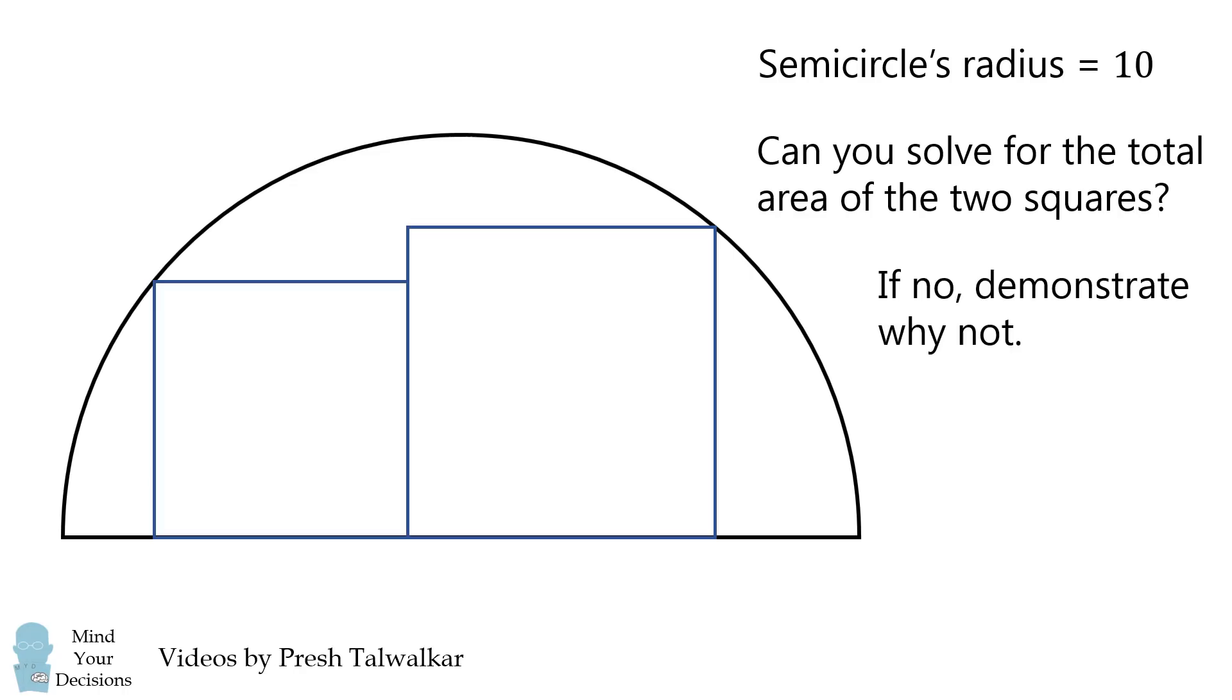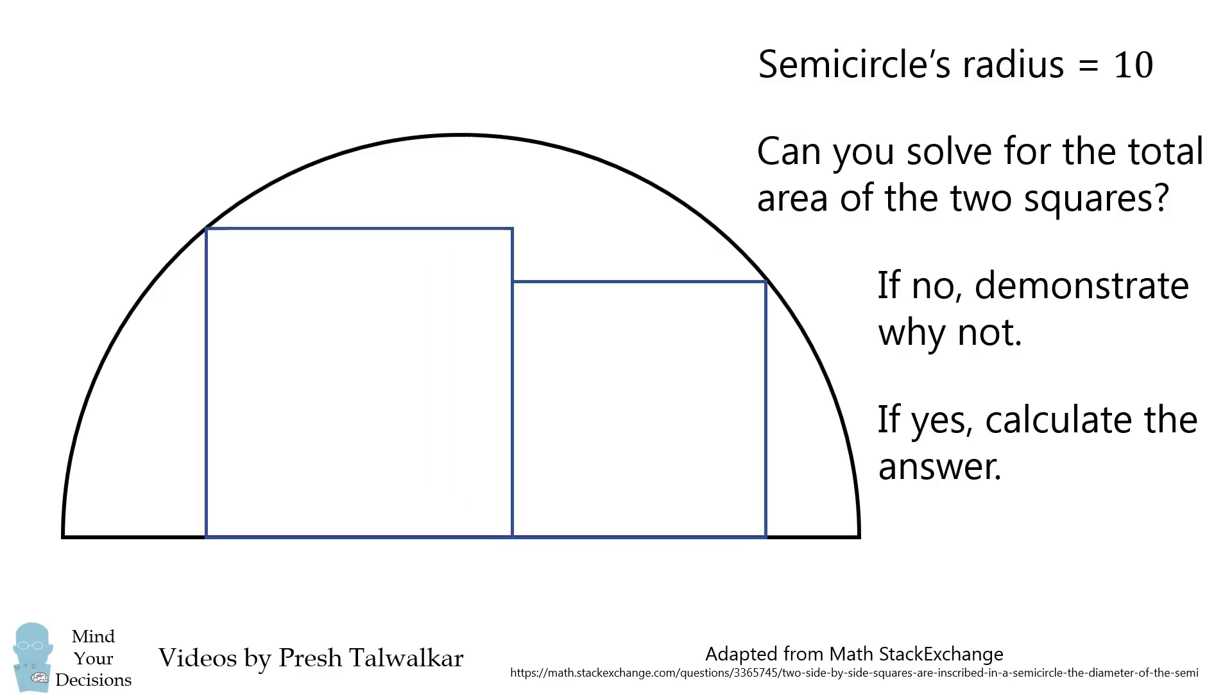If no, demonstrate why not. If yes, calculate the answer. This problem is adapted from Math Stack Exchange. Be sure to consider all possible ways that two side-by-side squares could be inscribed in the semicircle.